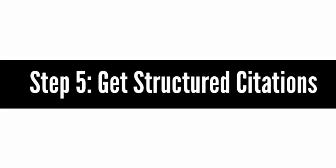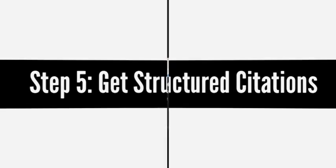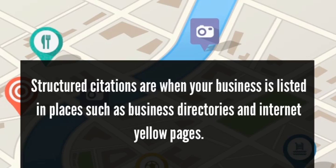Step 5: Get Structured Citations. Once you've completed the first three steps, Google should know what terms to rank your small business website and Google local page for. Now you need to increase the chances that your site will show up first when people search for your keywords. The primary way that you do this is by obtaining links and citations to your site. Structured citations are when your business is listed in places such as business directories and internet yellow pages. Oftentimes structured citations include a link to your website but not always. Google looks at structured citations and the consistency of those citations across the web to determine things like your correct address and phone number.